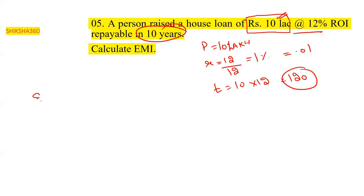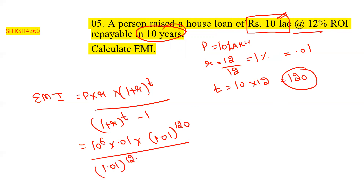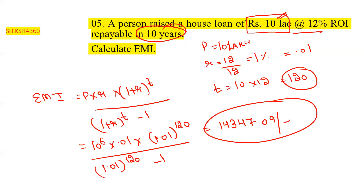Applying the EMI formula: EMI = 10^6 × 0.01 × (1.01)^120 ÷ [(1.01)^120 − 1]. Calculating this gives the EMI as rupees 14,347.09. These are the types of questions you will encounter in your examination.